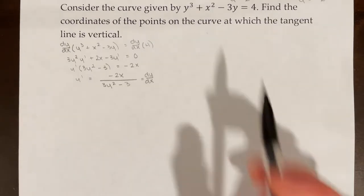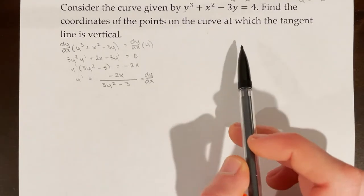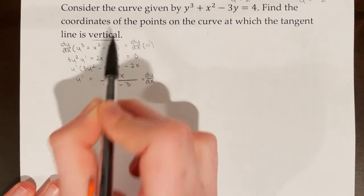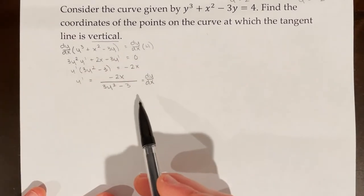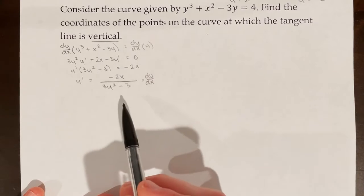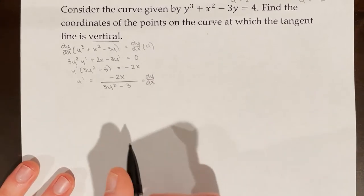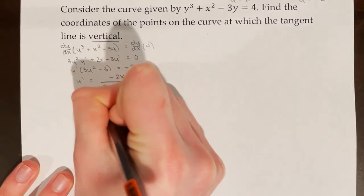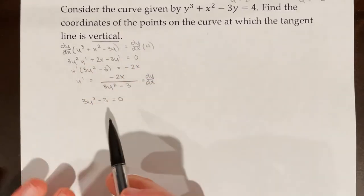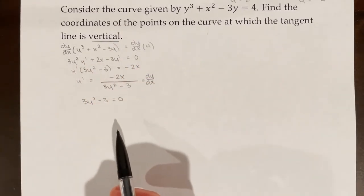Consider another curve. Find the coordinates of the points on the curve at which the tangent line is vertical. My first step is to find dy/dx, which I've already done. Now I set the denominator equal to 0: 3y² - 3 = 0, because when the denominator is zero, we have a vertical tangent line.